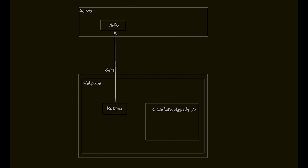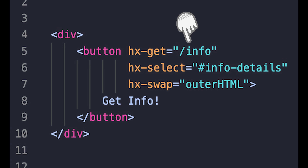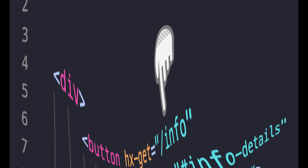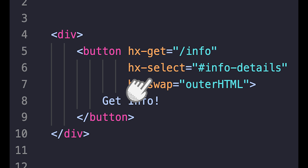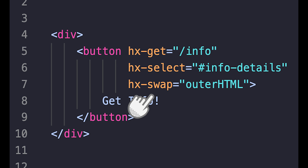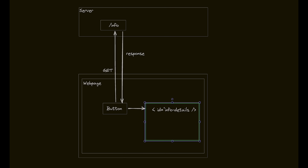The hx-get makes a GET call to the /info route. When the response is received, HTMX will find the element in the DOM designated by hx-select — that is, the element with the info-details ID. Then, because hx-swap is set to outer HTML, HTMX will swap out the entire selected element with the HTML received from the server.